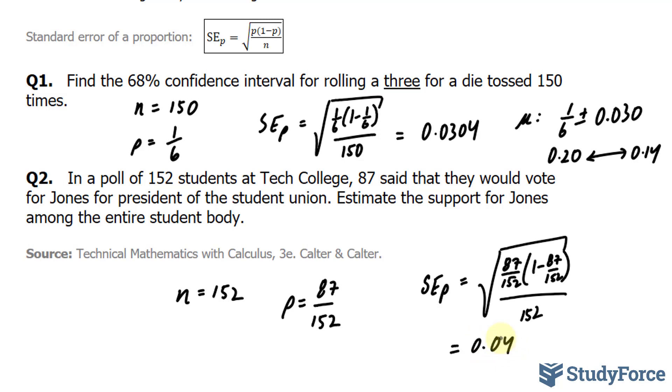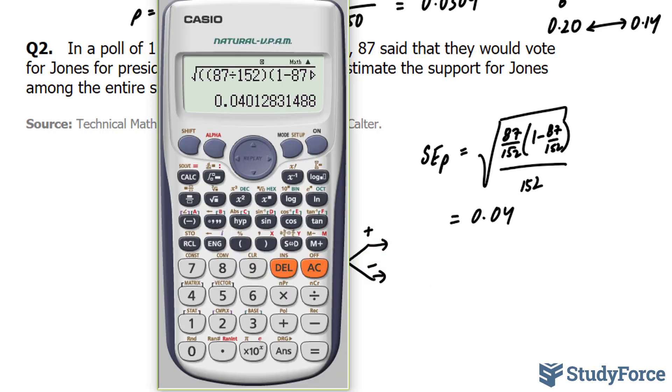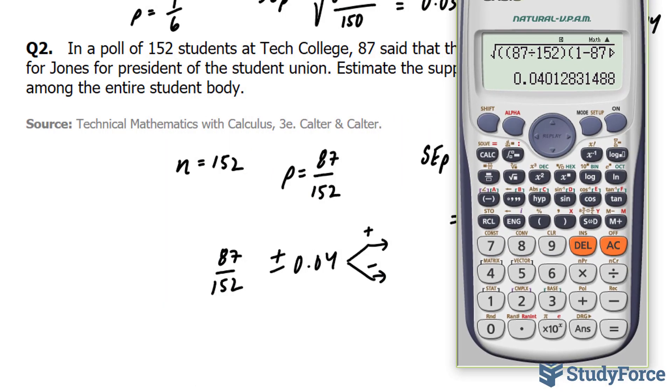It's very important that you try this on your own calculator in case you have a different calculator than mine. So once I get this number, I'll use the 68% confidence. So I'll take this and add it and subtract it to my proportion of 87 over 152. This will give me two numbers. So if I add it and subtract it, here's what we get. 87 over 152 plus 0.04.